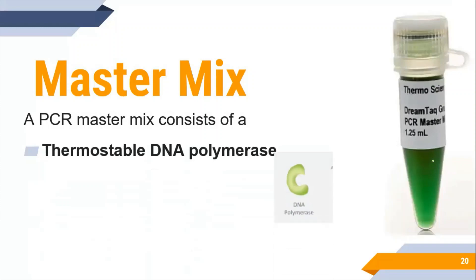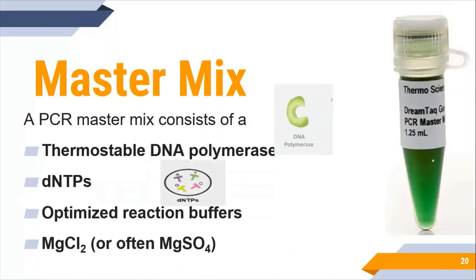Scientists provide convenience by making master mix tube. In master mix tube four components are present: thermostable DNA polymerase, dNTPs, reaction buffer, and magnesium chloride ions. These all components are present in one tube that we call PCR master mix tube. For PCR experiment we just need to add template, primers, and master mix in our PCR tubes.